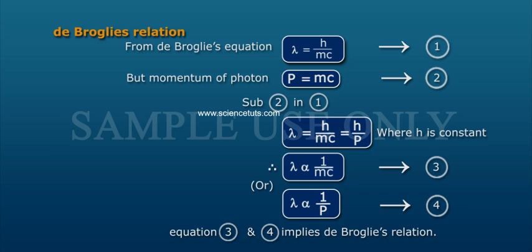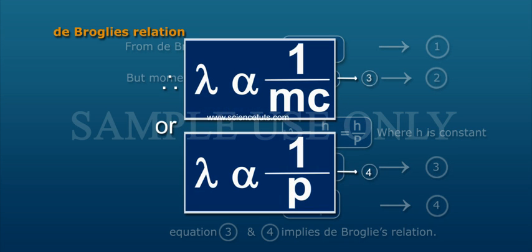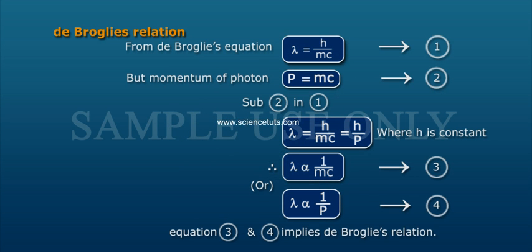Where H is Constant. Therefore, Lambda is directly proportional to 1 by MC, or Lambda is directly proportional to 1 by P. This is de Broglie's Relation.